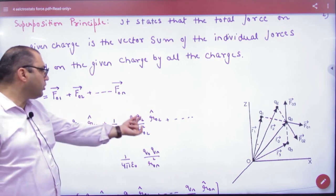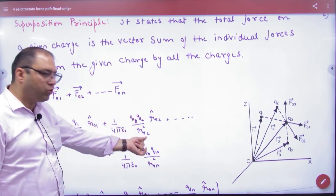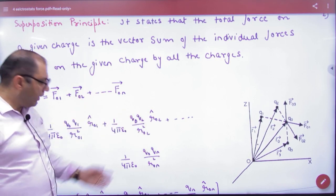Then for 0,2: q0 q2 by R0,2 square, R0,2 cap. And so on.